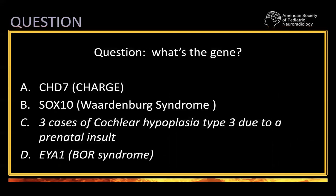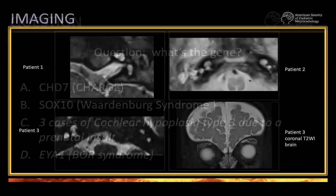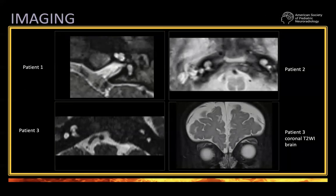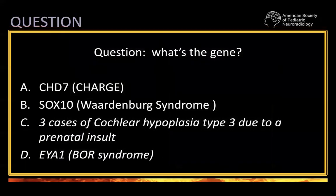Is this CHARGE? Is this a SOX10 mutation, so Waardenburg syndrome? Or are these three cases of cochlear hypoplasia type 3 due to a prenatal insult? Or is this branchio-oto-renal syndrome due to an EYA1 mutation? Remember, these are advanced temporal bone cases. Think about what was missing — what was the common characteristic, and in which aspect were the three temporal bone appearances similar versus different. You have 10 to 15 seconds to answer.